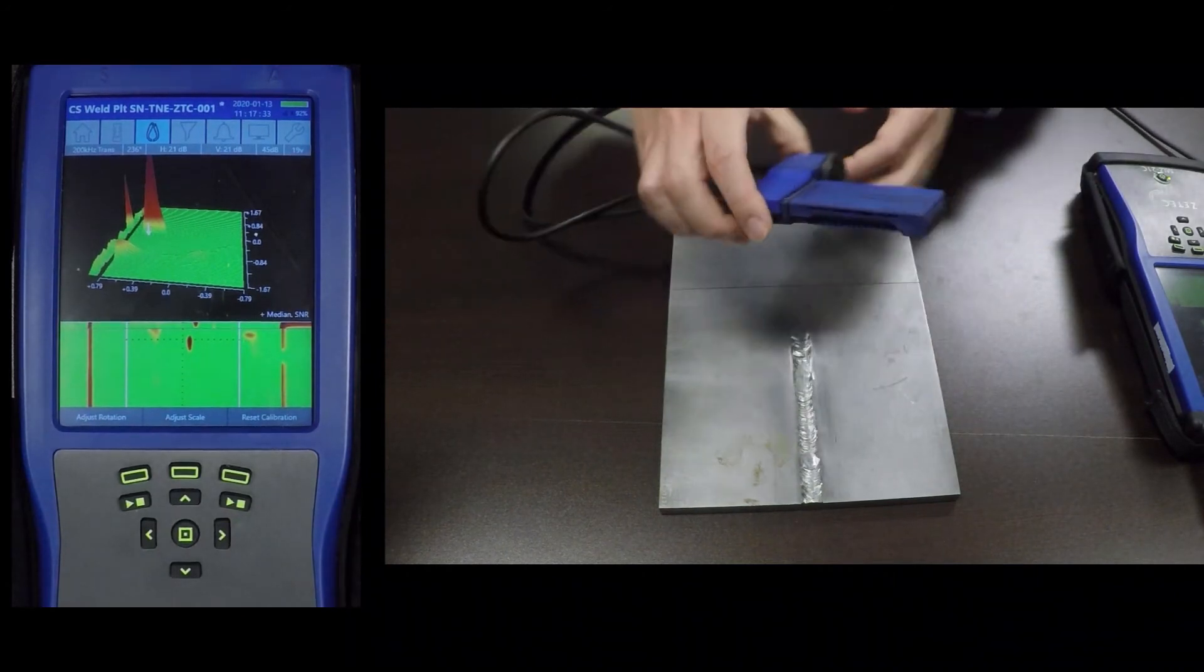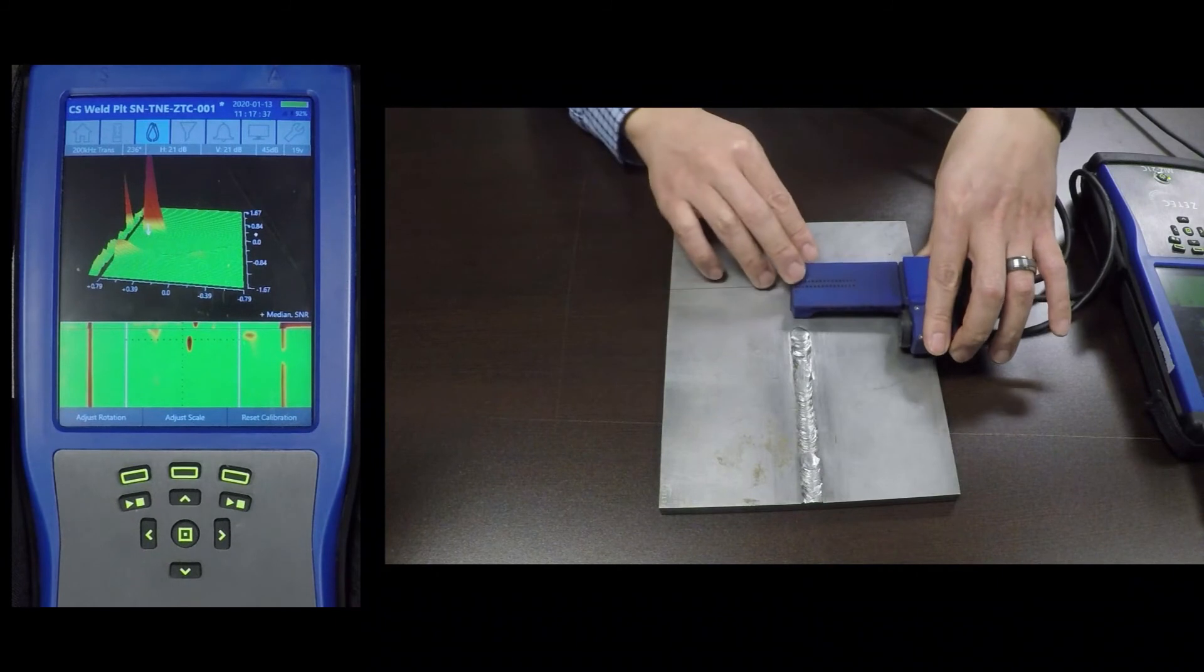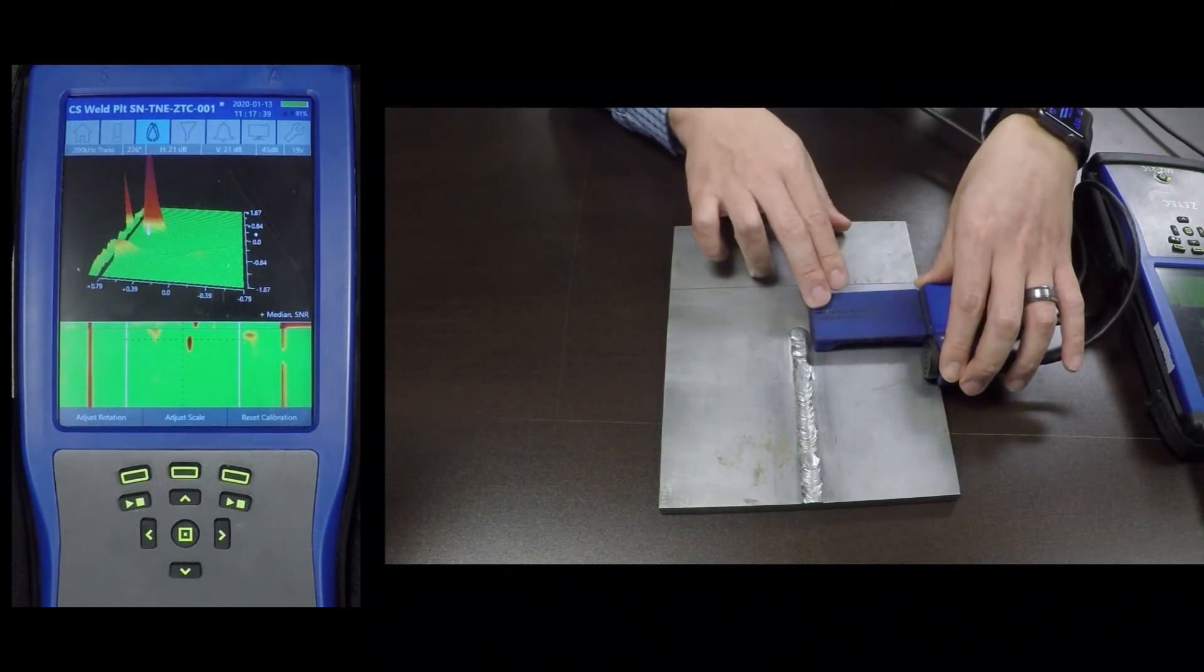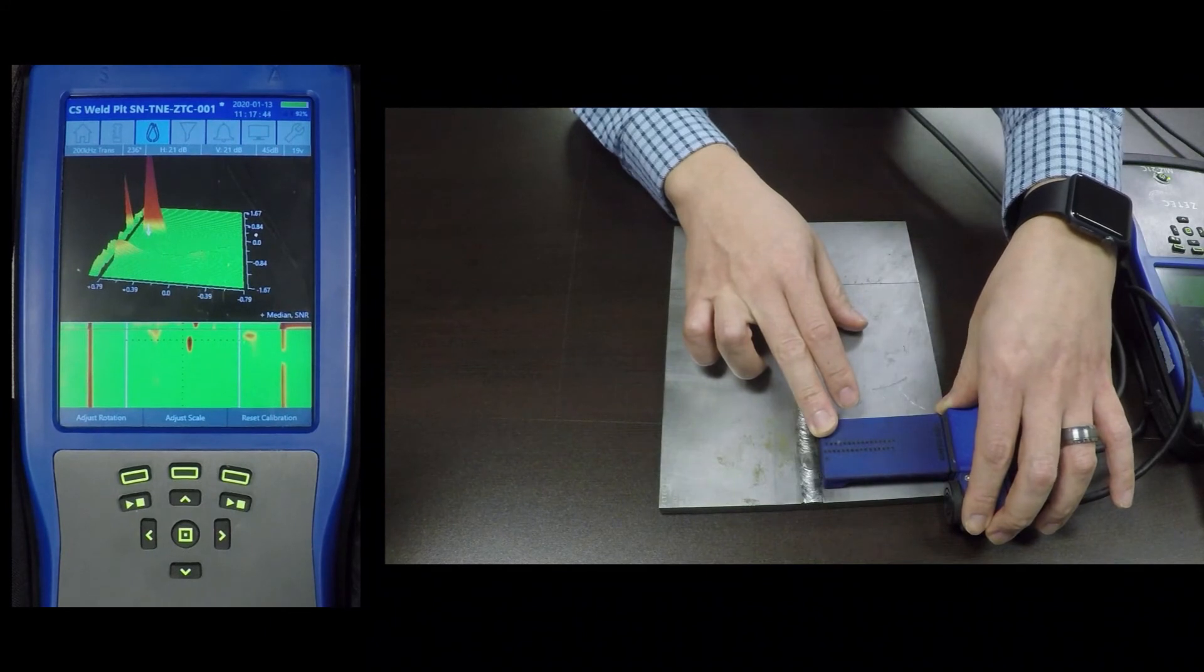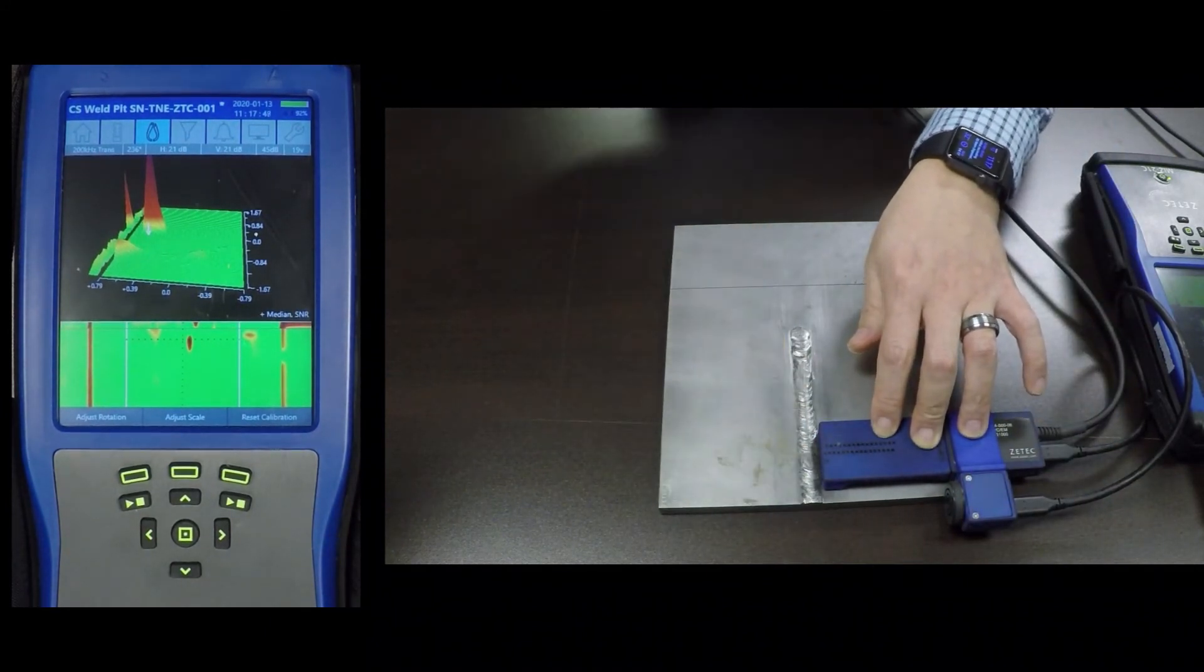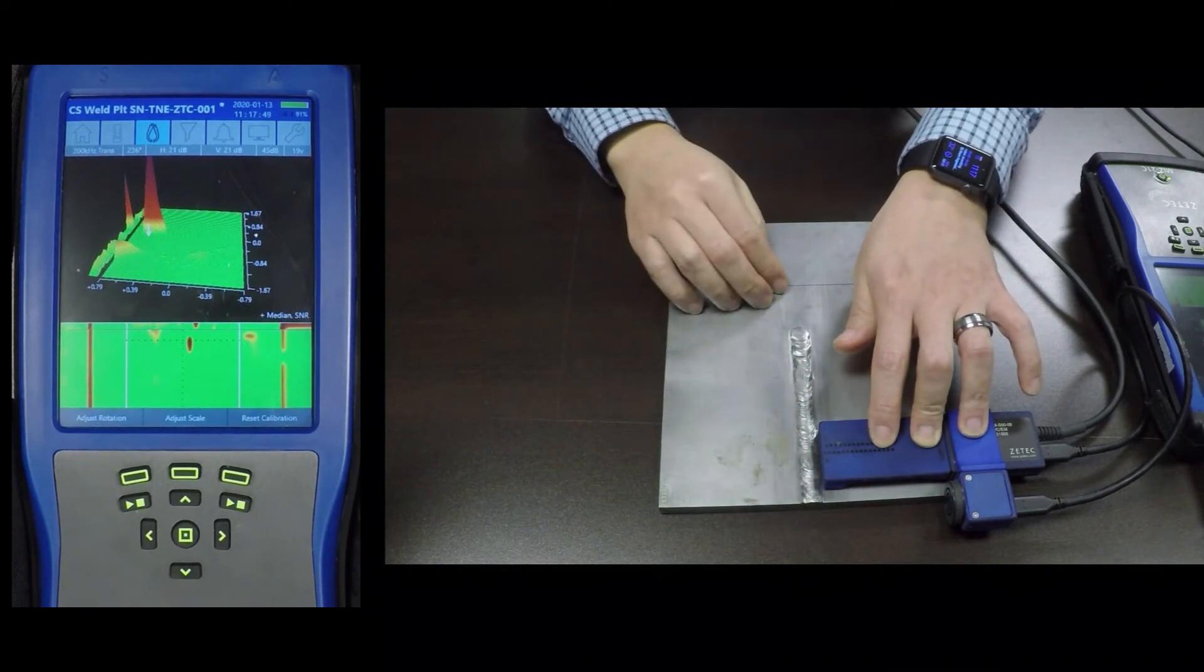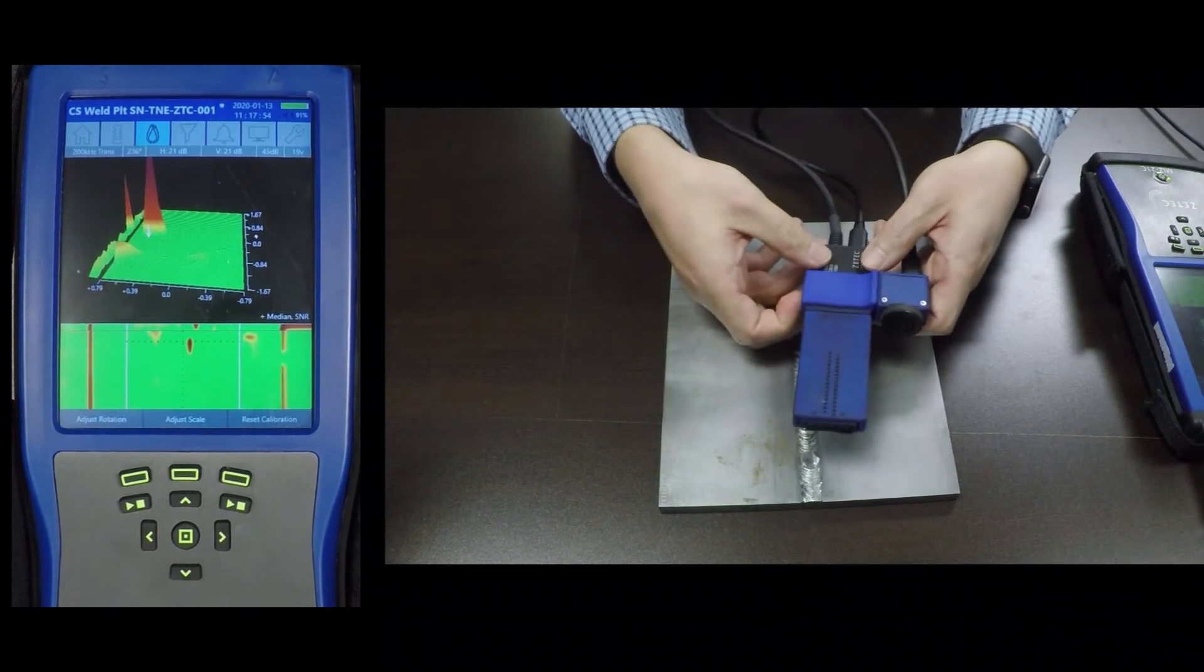And then now to scan the other side, you can see that if I were to just go ahead and scan right now, my encoder will go off the plate before my coils are done scanning the whole plate. So in this case, what I would have to do is reposition my encoder to the other side.